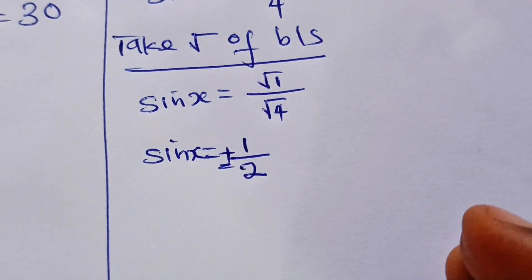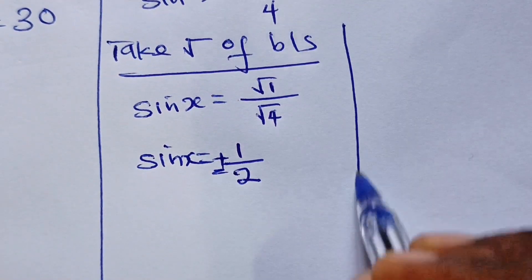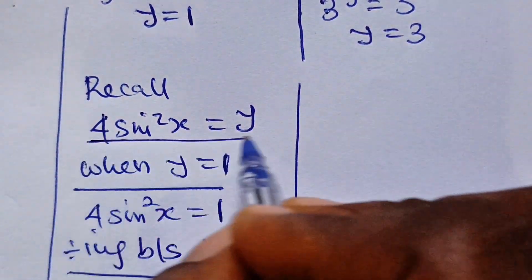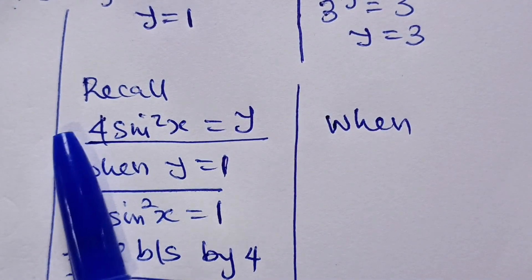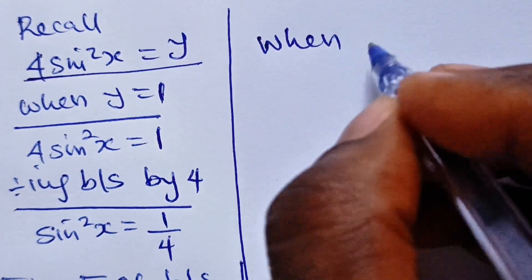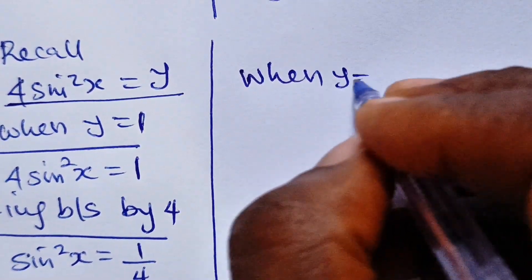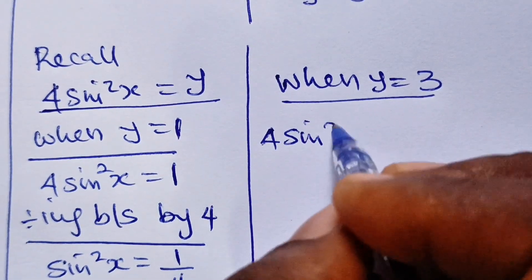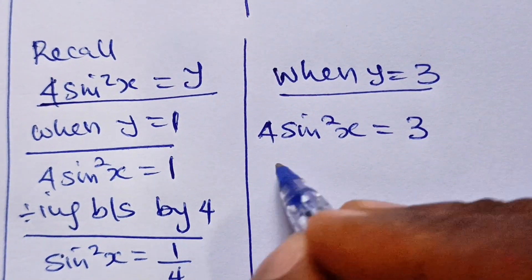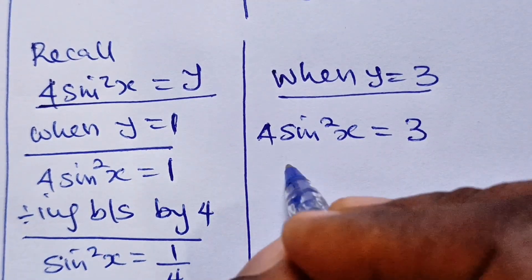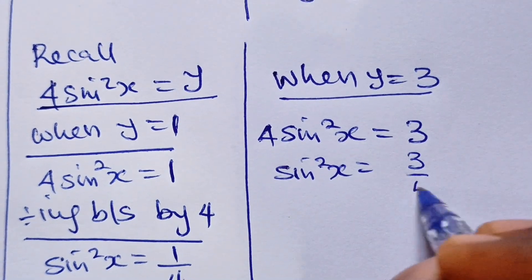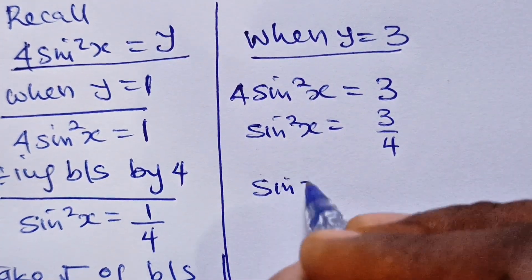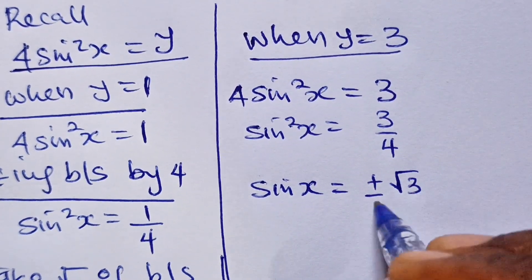So we have two cases to resolve: sin x = ±1/2 and sin x = ±√3/2. We can find the values of x using the sine graph. The sine graph oscillates between −1 and +1, with key points at 0°, 90°, 180°, 270°, and 360°.